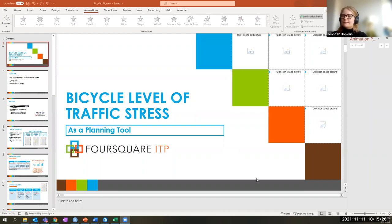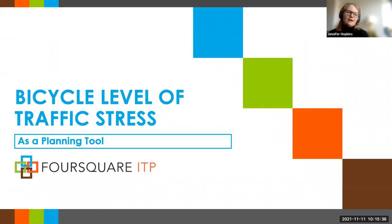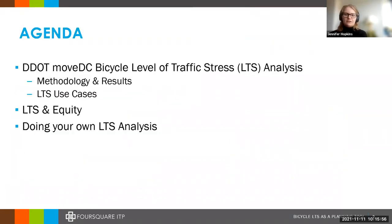Thank you, Clark, for that introduction. Hi everybody. Thank you for tuning into my presentation. My name is Jennifer Hopkins. I am a transportation planner with Foursquare ITP with a focus in GIS analysis and bicycle pedestrian infrastructure. Today I'm going to be talking about the bicycle level of traffic stress analysis that I was a part of for the MOVE DC Long Range Transportation Plan. I'll cover the methodology and results, use cases for LTS, its application to equity, and then touch on conducting your own LTS analysis.